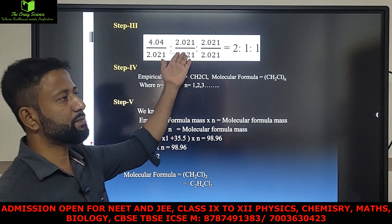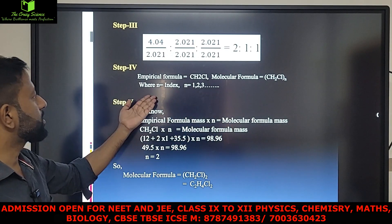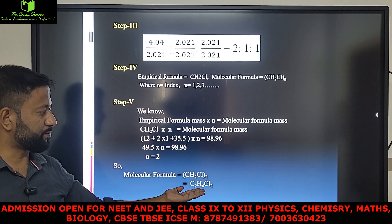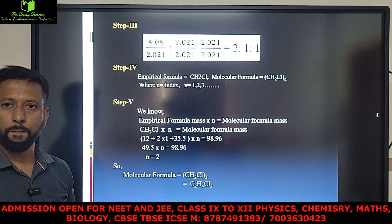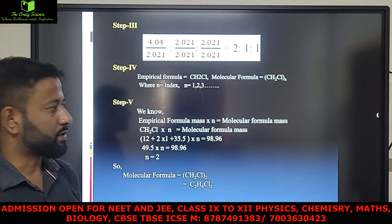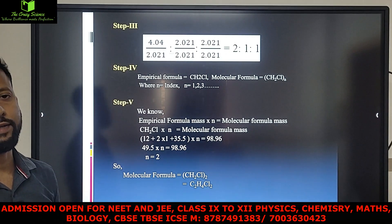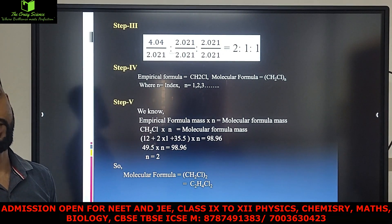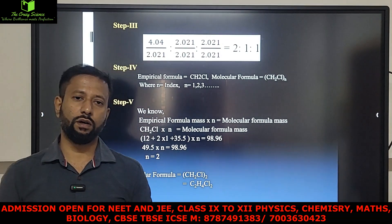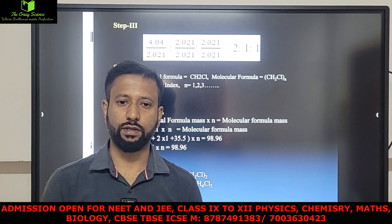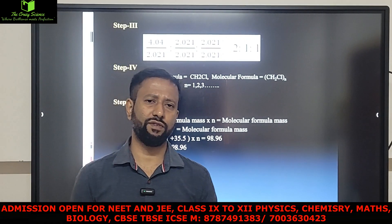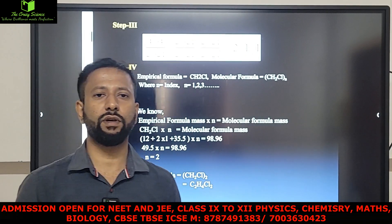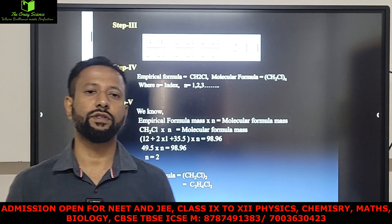After getting the moles, find the simple whole number ratio. After getting the simple whole number ratio, convert into the empirical formula. Then find the index N and put in the value to get the molecular formula. In the next class, we will see stoichiometry and stoichiometric applications, and different types of moles — molarity, molality, and all these things. I think within one more lecture, we can finish the basic concepts of chemistry. Thank you. See you in the next lecture.